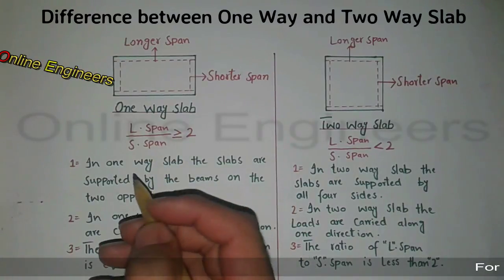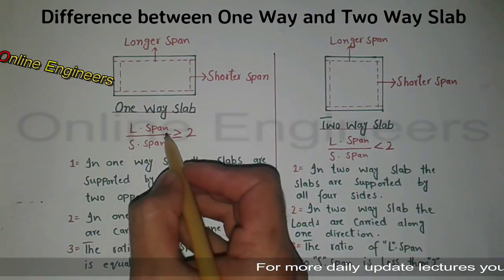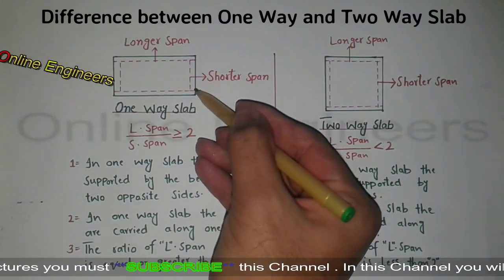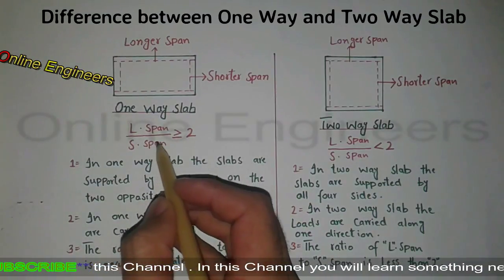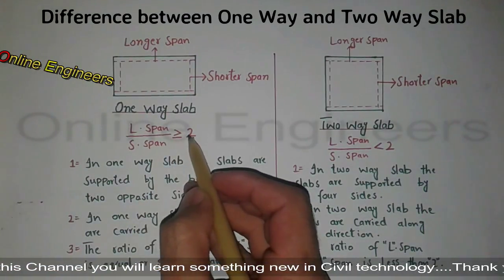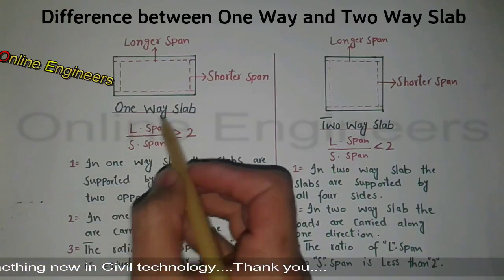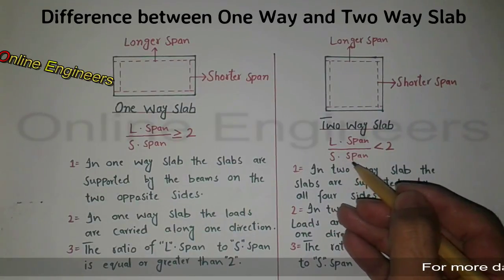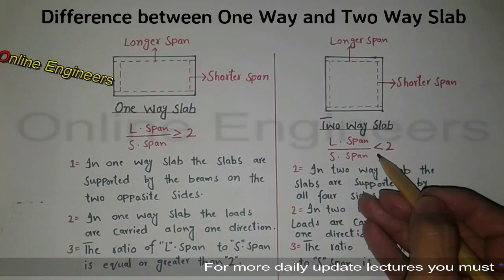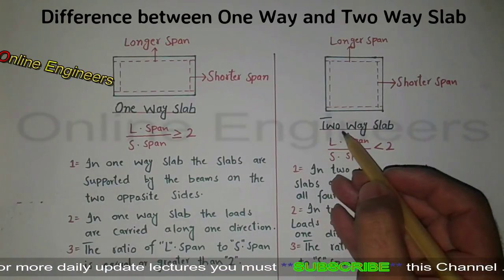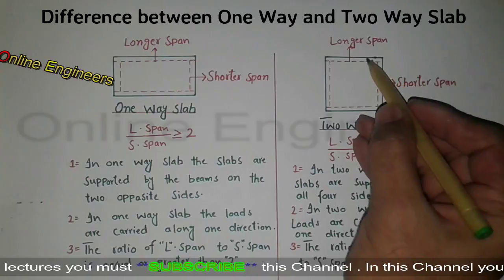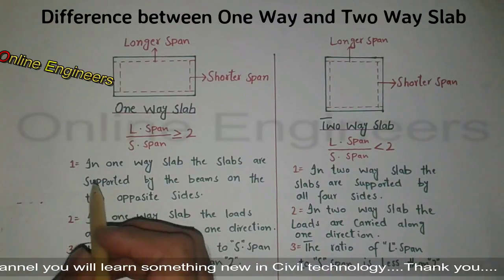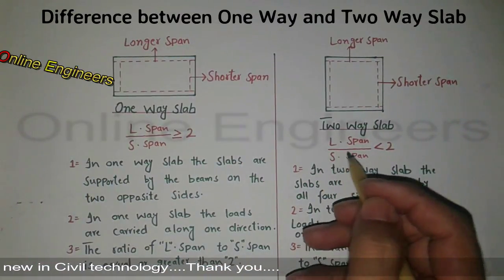One-way slab. Simply, longer span divided by shorter span — this is the longer span and this is the shorter span. If the answer is equal to or greater than 2, it is known as a one-way slab. If the answer is less than 2, it is known as a two-way slab. So this is the main difference between one-way slab and two-way slab.